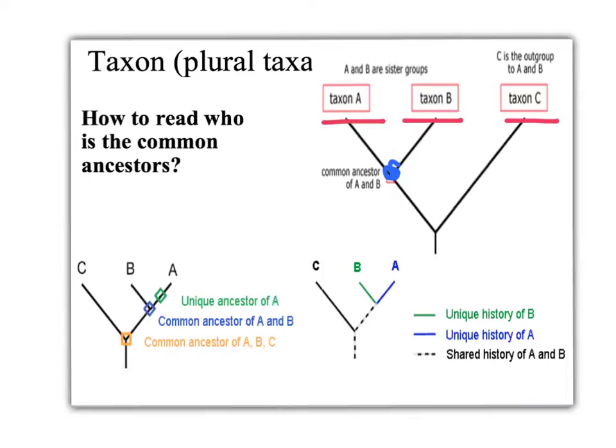So in this area here, taxons A, B, and C all share a common ancestor. However, people will make the mistake of thinking that this area is the common ancestor for A, B, and C because this line connects straight with this one. However, that is not the case. This one is the common ancestor for A and B. This one is the common ancestor for A, B, and C.